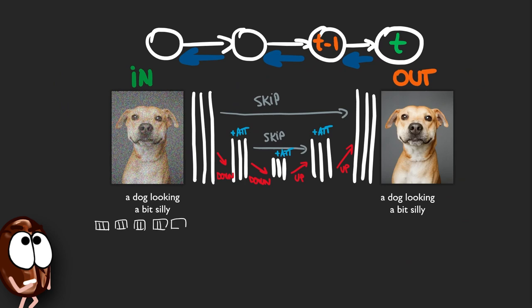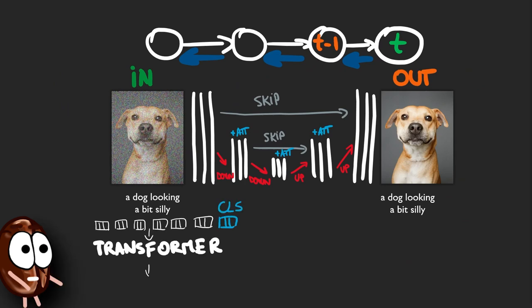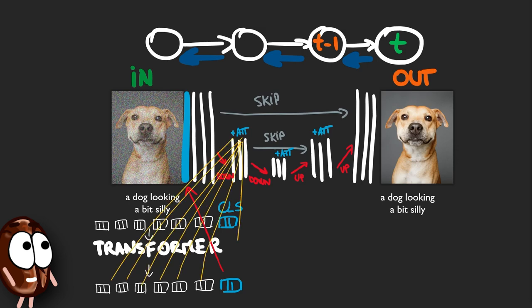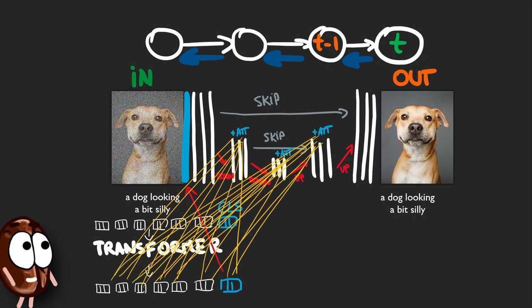But now, how does the text come into play? It is injected into the whole process in two ways. First, as input to the diffusion model by concatenating the text representation coming from a language transformer to the image input. And second, through cross-attention, letting the U-Net attention layers attend to the text tokens.